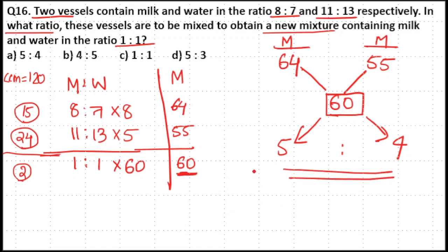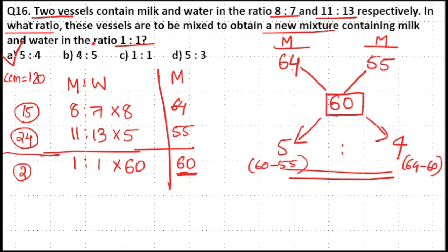When you use the allegation method, always use milk quantity. The initial quantities in the first and second vessels are 64 and 55 respectively. In the middle you have the resultant quantity of milk, which is 60. Subtracting gives 64 minus 60 equal to 4, and 60 minus 55 equal to 5. So 5:4, option A, is your answer. You have to mix these two vessels in a 5:4 ratio to get a 1:1 resultant mixture.